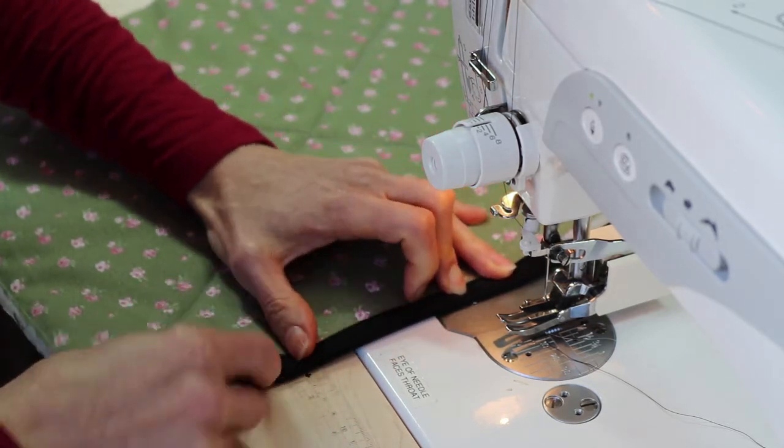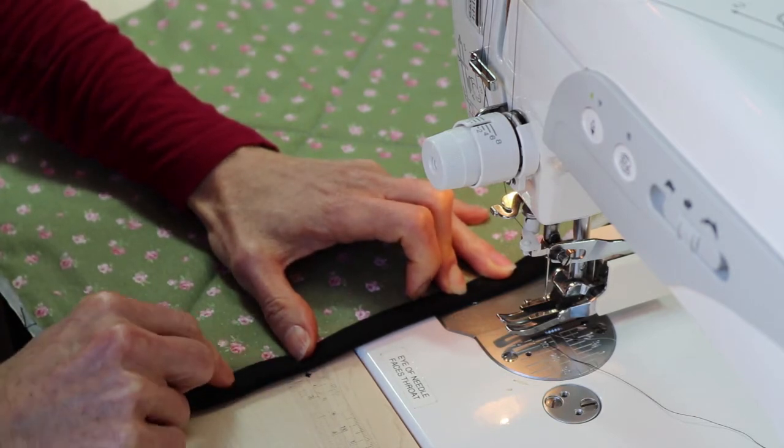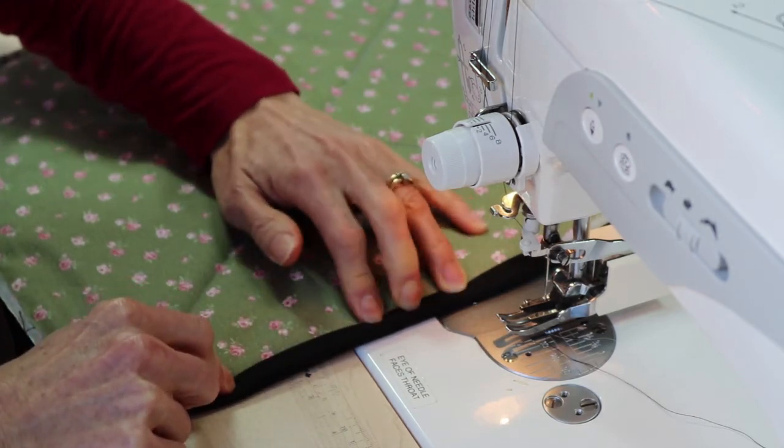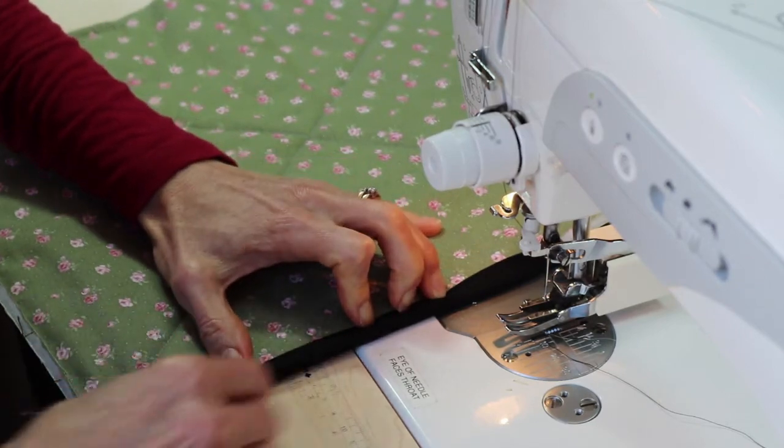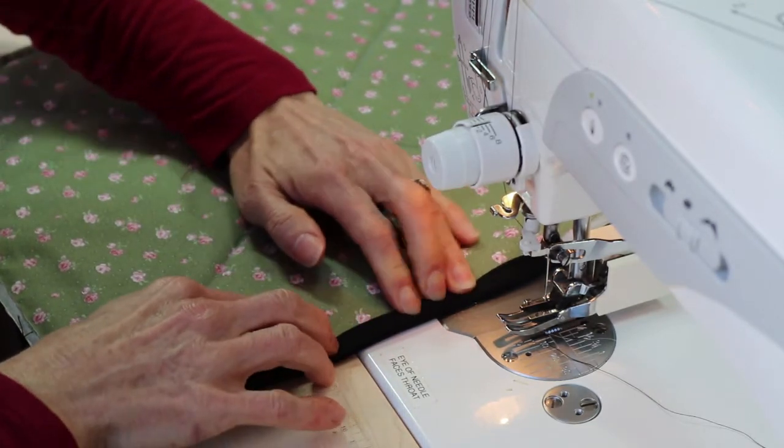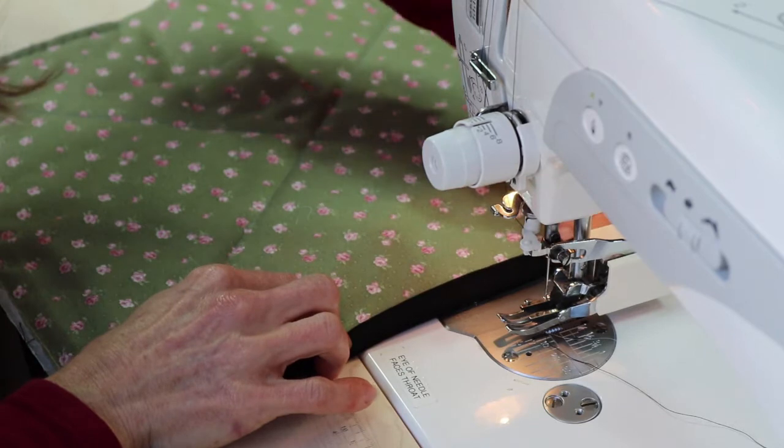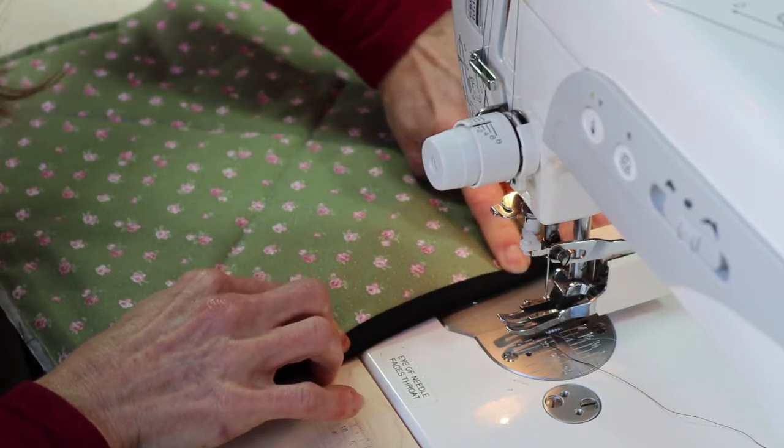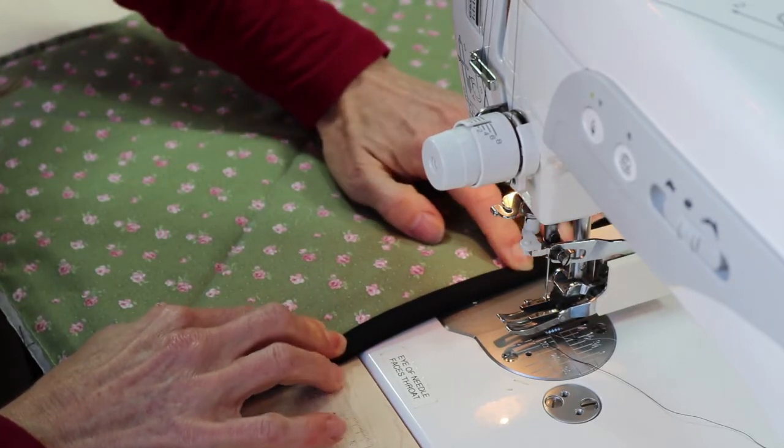I've changed my thread to black and in the bobbin I've actually put a nylon invisible thread. I find that that works really well in the bobbin and it's invisible from the backside.